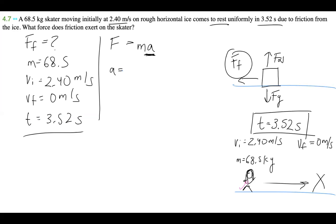To do that, we're going to use the formula a = (vf - vi) / t. vf is zero, so 0 m/s minus 2.40 m/s over 3.52 seconds. That's -2.4 divided by 3.52.